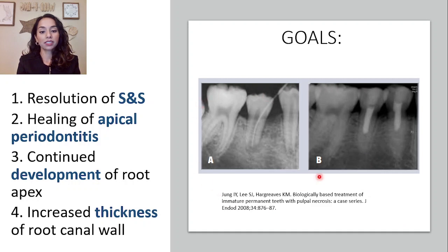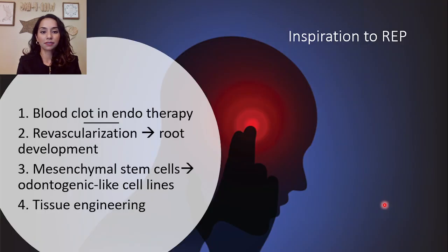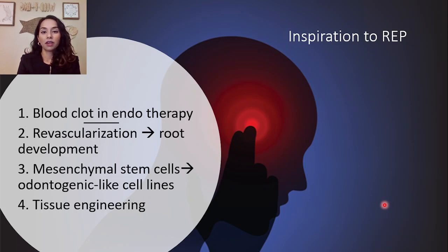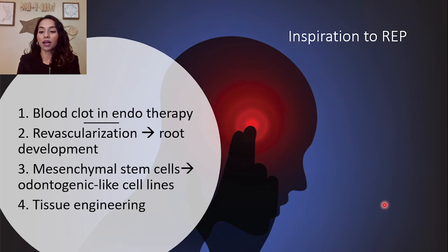So again, we want to take something that looks like this upon presentation and end up with our desired end result. What inspired the field of REPs? They found that the blood clot plays a huge role in endotherapy, revascularization plays an important role in root development, mesenchymal stem cells can perform odontogenic-like cell lines, and there were major advances in tissue engineering.